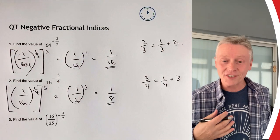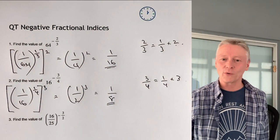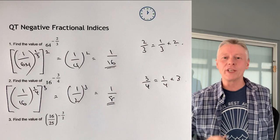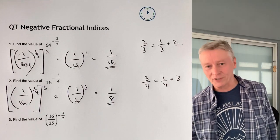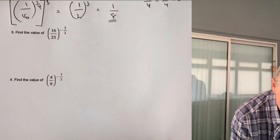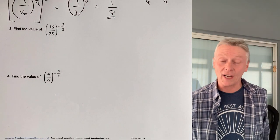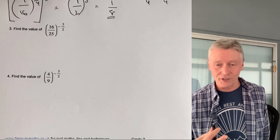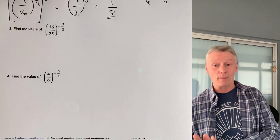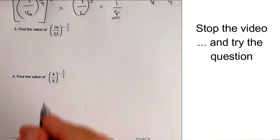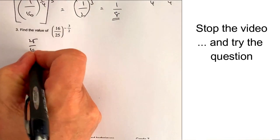Let's have a look at questions 3 and 4, which again we use exactly the same principle with. So what I'm going to do is just move this up on the screen a little bit. And because it's the negative reciprocal, what I've got to do is flip it around the other way. Okay, so I've got 25 over 16.